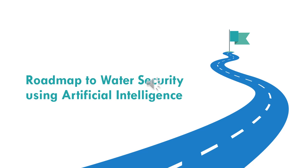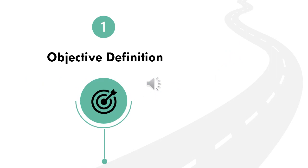How do we create a blueprint using artificial intelligence to combat water scarcity? The first step requires defining the specific goals — whether it's optimizing existing water resources, predicting future scarcity, reducing wastage, or improving water quality.